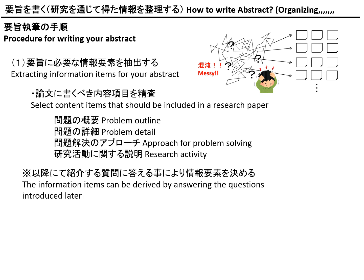Problem outline is a rough explanation about what kind of problem you are going to solve through your research. Next is problem detail. Once you have determined the problem outline, you need to describe and explain the problem outline in detail so that readers can understand which kind of problem you are dealing with.